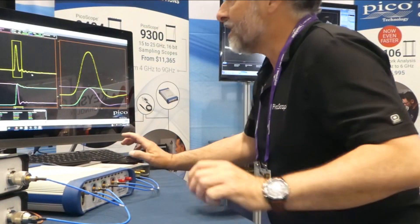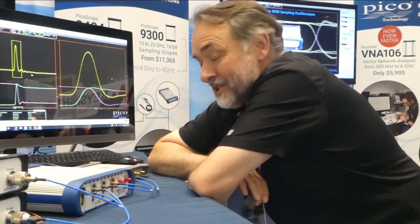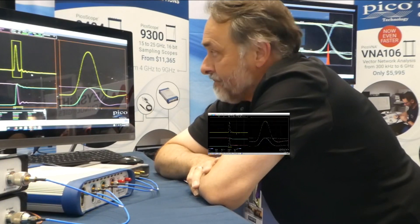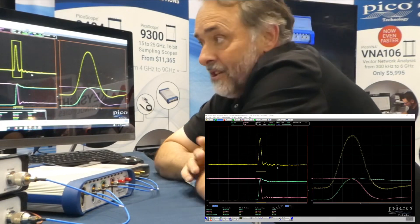Hi, I'm Mark Ashcroft. I'm here at IMS in Boston, Massachusetts, 2019, with the 9404 5 gigahertz SXRTO — quite a new oscilloscope with a new architecture — at a price just a tad below $15,000. It's a new architecture that achieves a 5 gigahertz 4-channel oscilloscope.